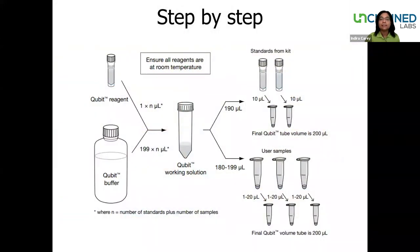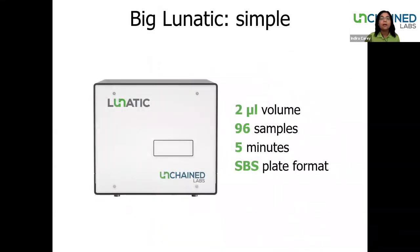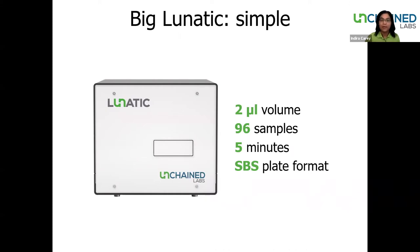Fluorescence protocols are multi-step. They require dilutions, they take time, they use costly reagents, and they can also introduce pipetting errors which negatively impact results. Our Big Lunatic is a full-spectrum UV-Vis spec which requires only two microliters per sample and no dilution steps nor standard curves. Lunatic can measure up to 96 samples at a time in just five minutes using our plates with a single microcuvette.